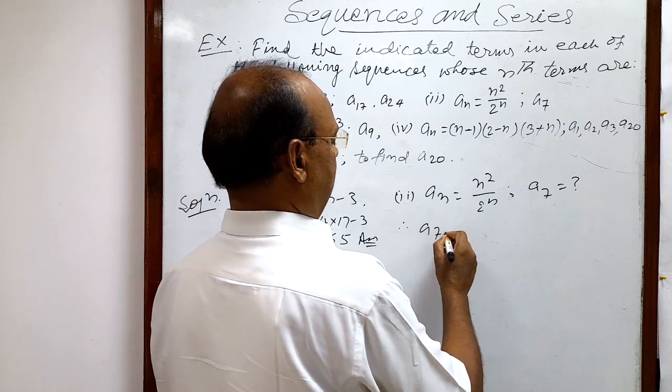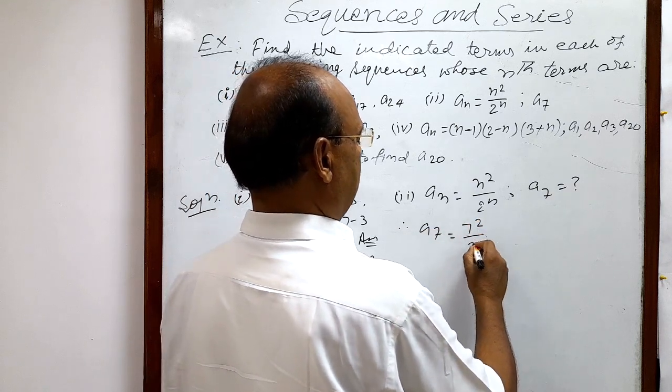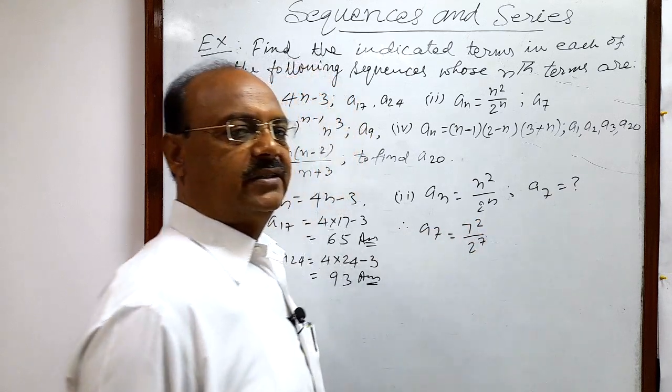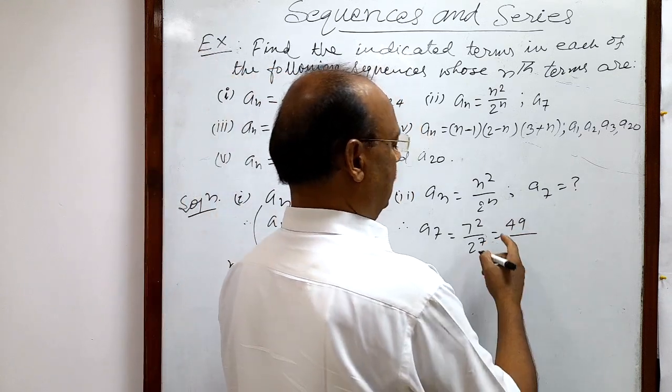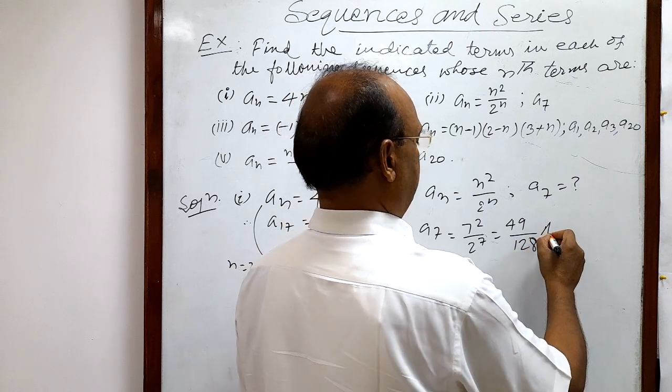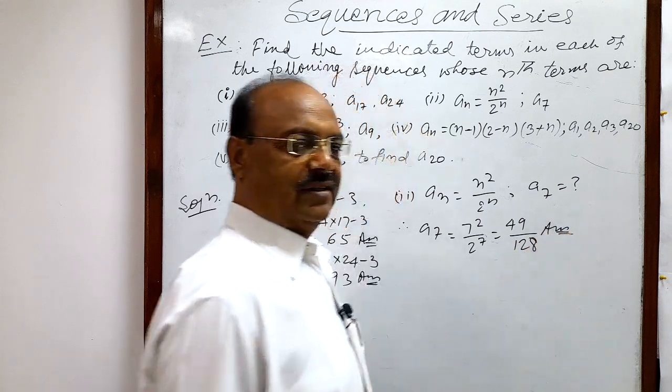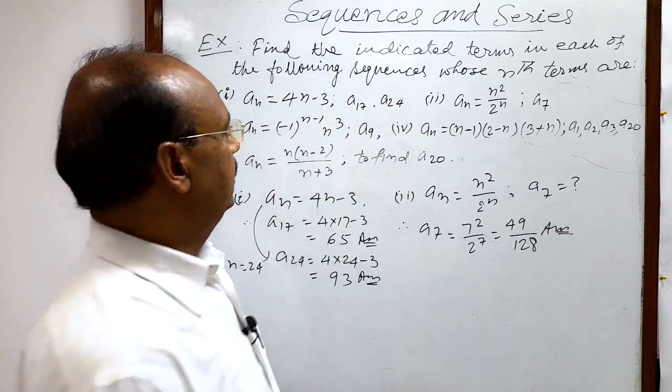So therefore, a7 is equal to 7 square by 2 to the power 7. So 7 square is 49 and 2 to the power 7 is 128. This is the answer. Now let us see third question.